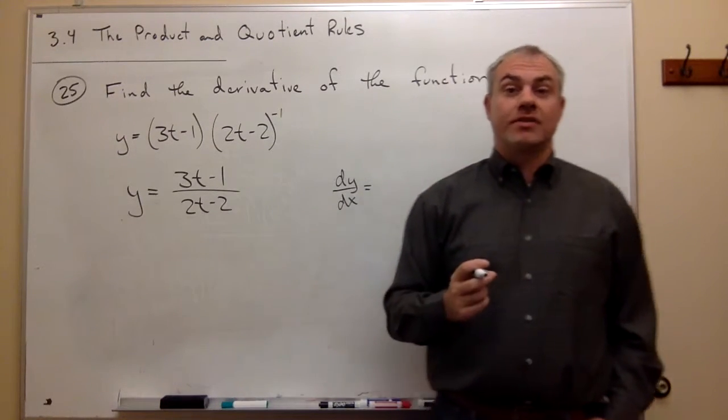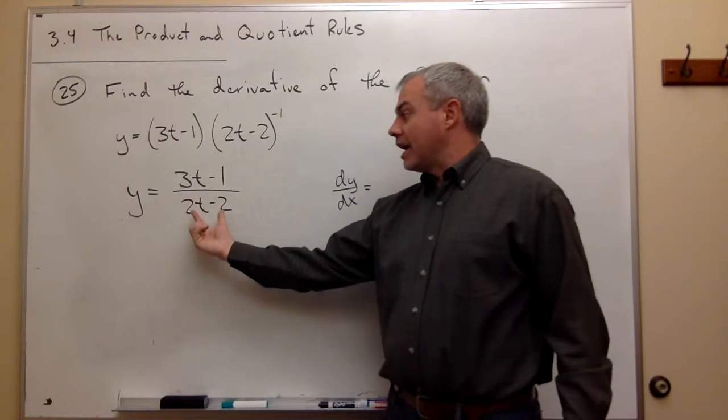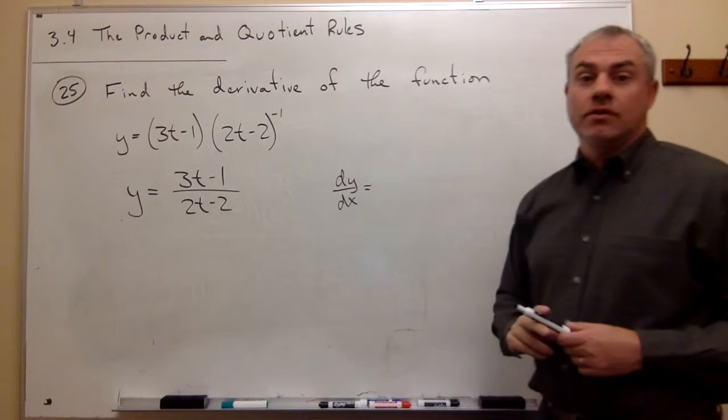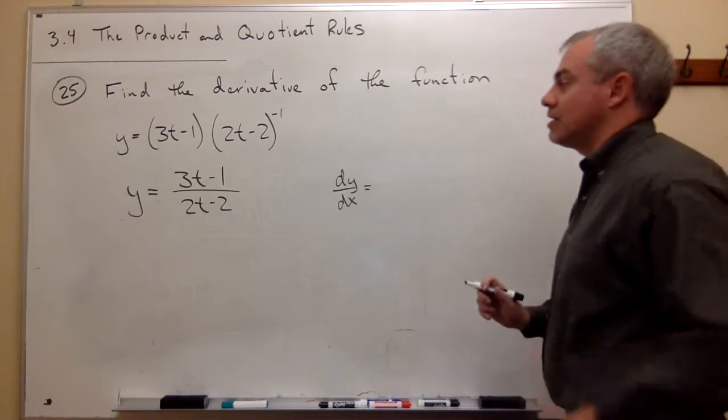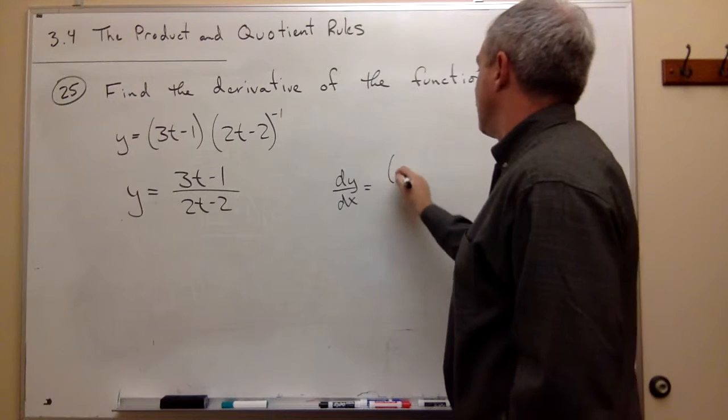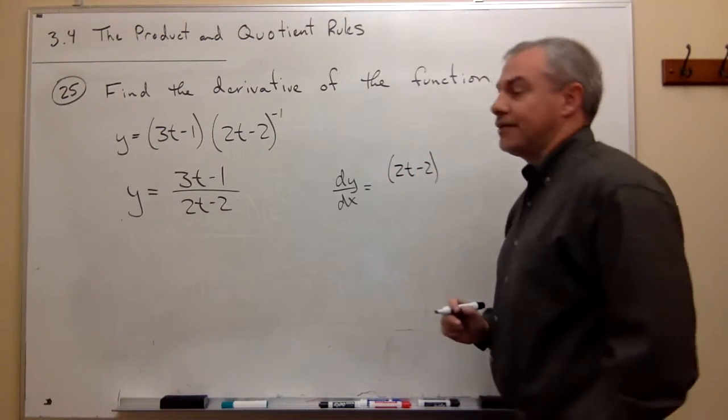And the rule is that I always take the thing on the bottom, and I write it down first. So I take the guy on the bottom, 2t minus 2, and I write 2t minus 2, and I leave that alone.